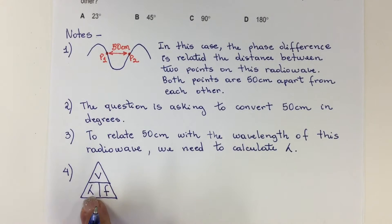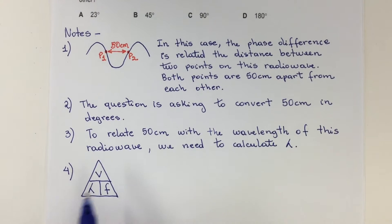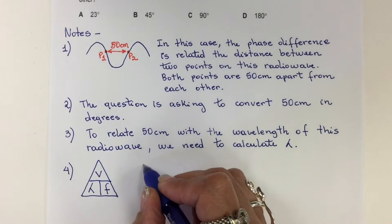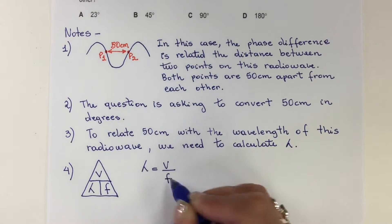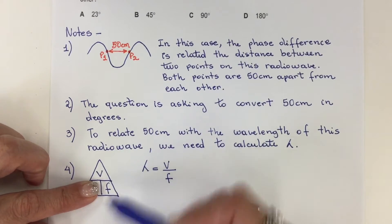From this triangle, we can derive three formulas for each one of these variables. In this case, we need to find the wavelength. The wavelength is V over F, wavelength equals V over F.